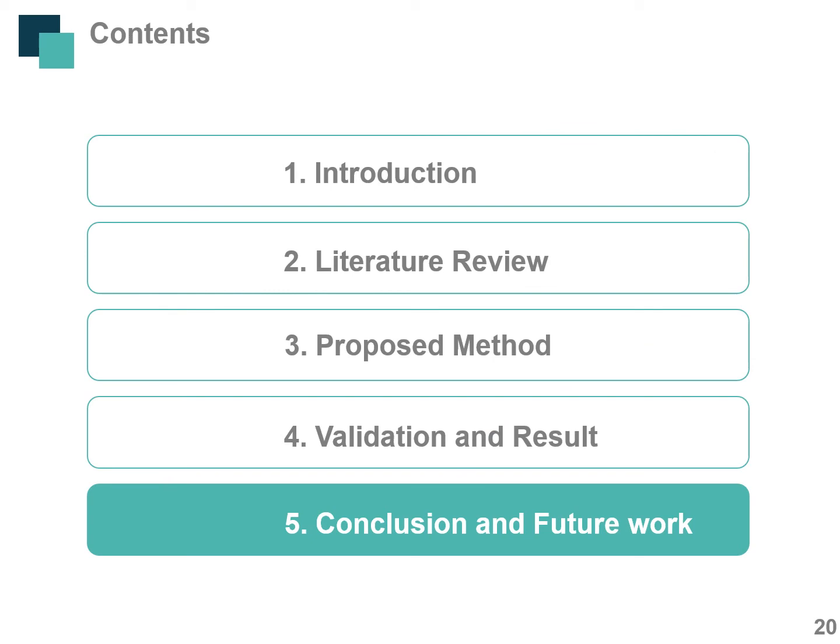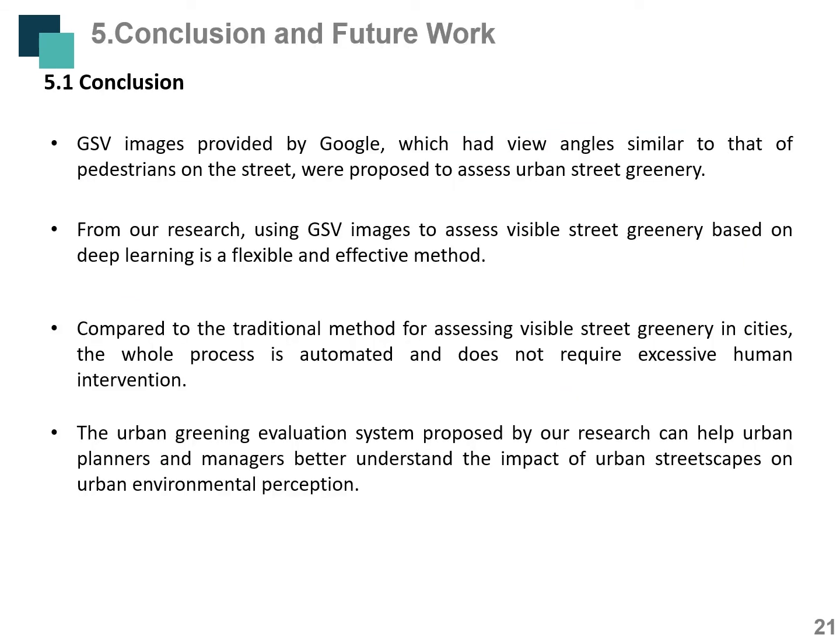The last part is the conclusion. GSV images provided by Google, which have view angles similar to those of pedestrians on the street, were proposed to assist urban street greenery assessment. From our research, using GSV images to assess visible street greenery based on deep learning is a flexible and effective method. Compared to traditional methods, the whole process is automated and does not require excessive human intervention. The urban greening evaluation system proposed can help urban planners and managers better understand the impact of urban streetscapes on environmental perception.